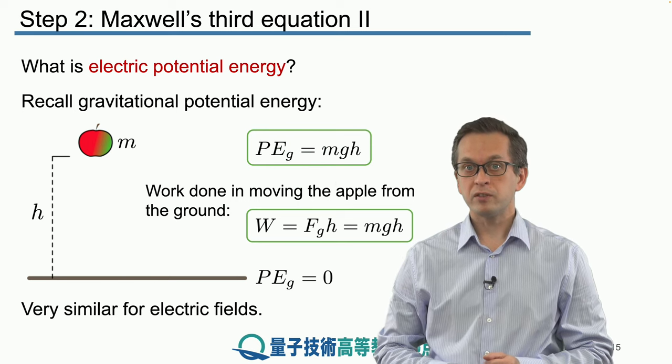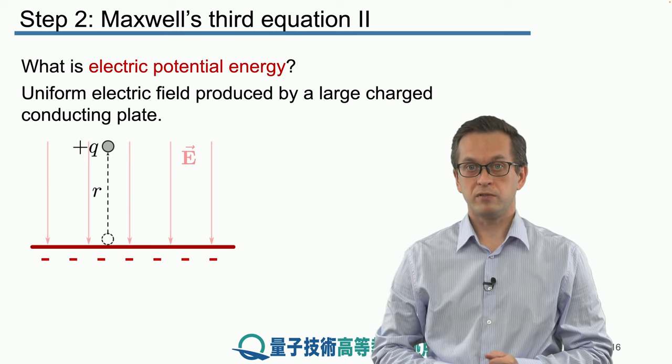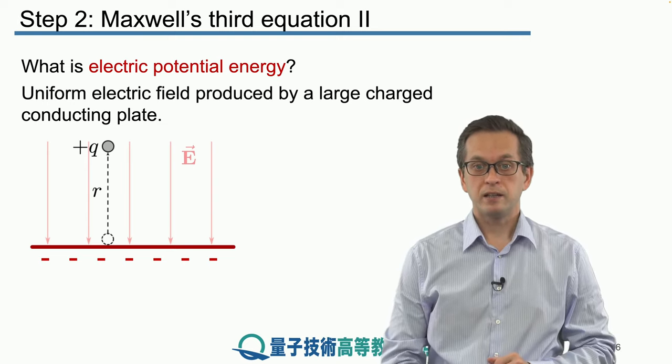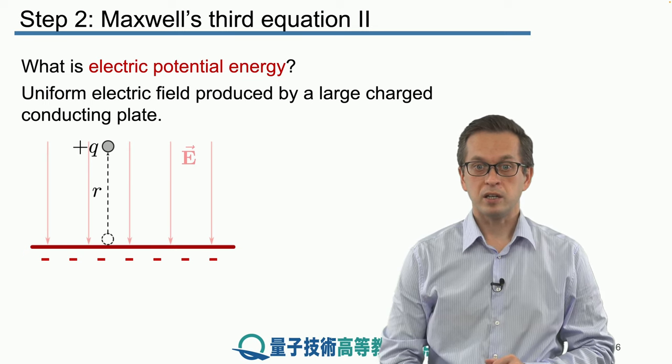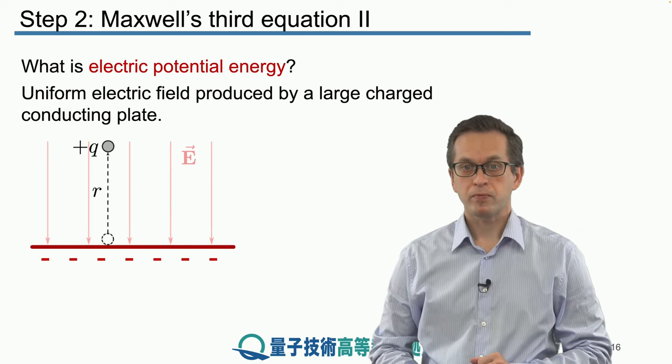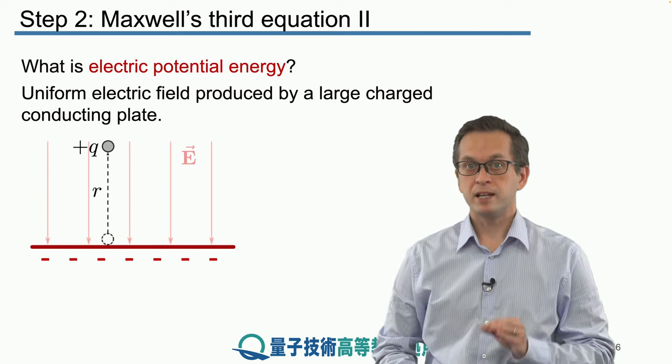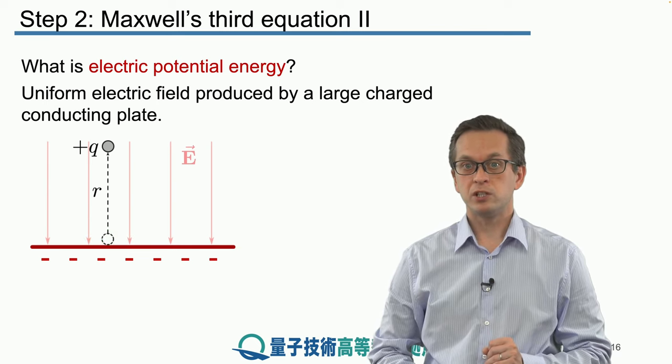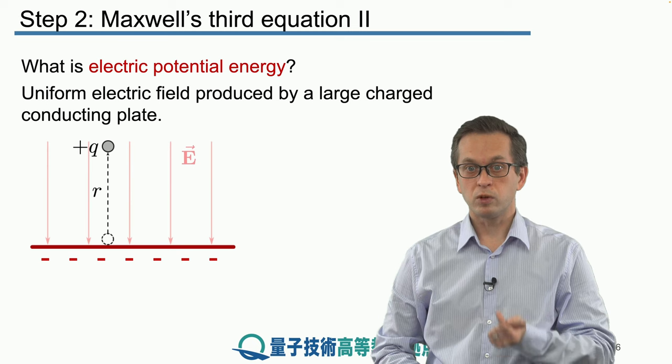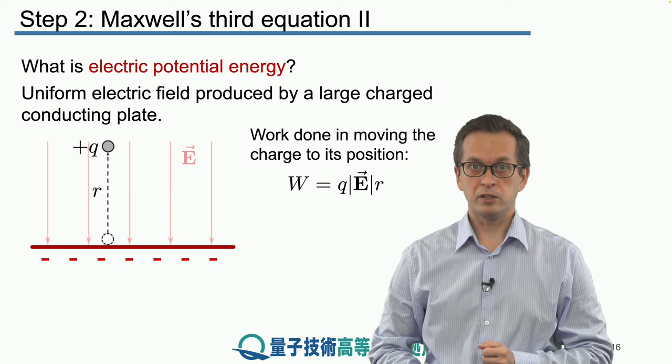The situation with electric fields and charges is very similar. Consider that you have some uniform electric field, and this can be produced by a very large conducting plate. In this case, this plate is negatively charged. And our test charge is positive, given by this plus q. What we do is start at the surface of the metal and say that that's our position where the potential energy is zero, the electric potential energy is zero. And then we have to apply some force to raise the charge to work against the field to distance r away from the charged conducting plate.